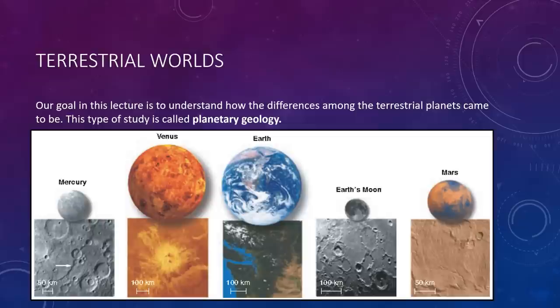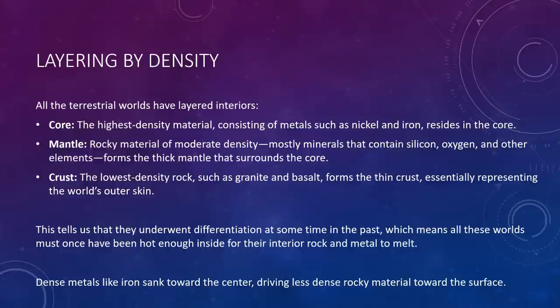Bizarre bulges and odd volcanoes dot the surface of Venus. Mars, despite its middling size, has the solar system's largest volcanoes and a huge canyon cutting across its surface, along with numerous features that appear to have been shaped by liquid water. Earth has surface features similar to all of the other terrestrial worlds, and more, including a unique layer of living organisms that covers almost the entire surface of the planet, which we call the biosphere. Our goal in this lecture is to understand how these differences among the terrestrial planets came to be, and this type of study is what we call planetary geology.